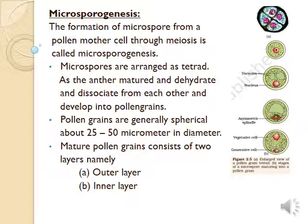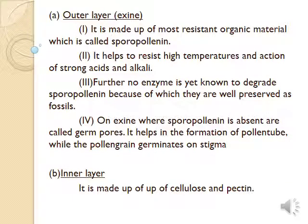Pollen grains are generally spherical in shape, surrounded by a layer called the sporoderm, which is differentiated into two layers: the outer layer and the inner layer. The outer layer is called the exine, made up of a resistant organic material called sporopollenin. Because of this material, pollen grains are protected from high temperature and the action of strong acids and alkali. No enzyme is known to degrade sporopollenin, which is why pollen grains are well preserved as fossils. Areas where sporopollenin is absent on the exine are called germ pores, which is why exine is called a discontinuous layer. The germ pores help in the formation of the pollen tube.